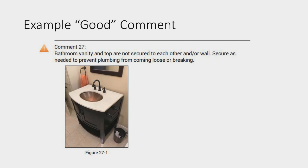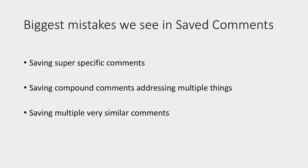Look at this good comment — everybody's run into this. It's a vanity top and base that are loose, not attached to each other or the wall. The big problem is when they're loose, the plumbing can come loose or you can break it. Very simple: 'The bathroom vanity and top are not secured to each other or the wall. Securing is needed to prevent plumbing from coming loose or breaking.' You can save this to your library and use it anytime it's loose. You can search for 'vanity loose' or 'vanity secure' and you're going to find it.